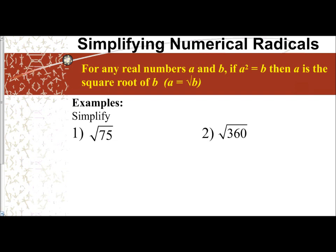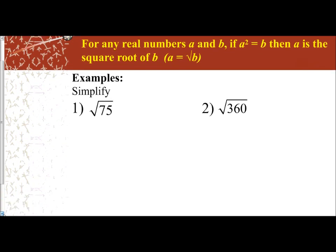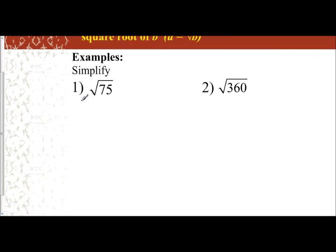This is all review. How do we simplify radicals? Well, what we've done in the past is we try prime factorization. You break down the number inside the radical into factors of it. So if I take a look at 75, I'm going to say it's 25 and 3.